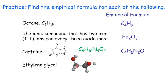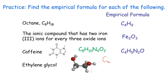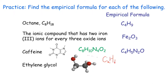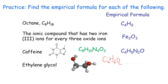Ethylene glycol: you have two carbons, then six hydrogens — 2, 3, another 3, that's H6 — and the two red ones are oxygen, O2. So that's the molecular formula C2H6O2. Divide everything by two: you have C1H3O1. Of course, for subscripts, if it's 1, you just don't write it down — giving the empirical formula CH3O.